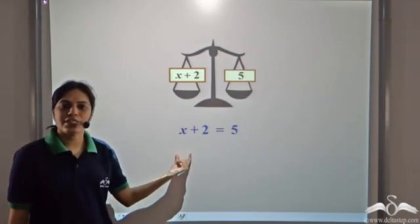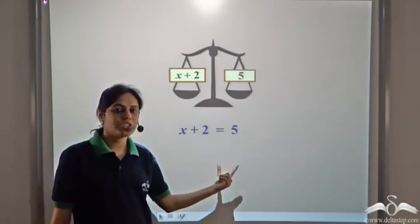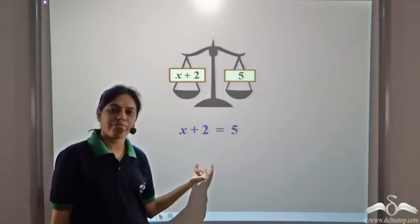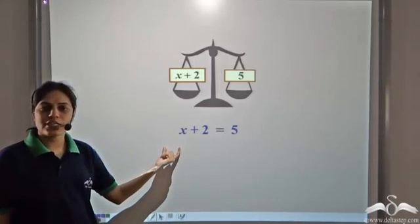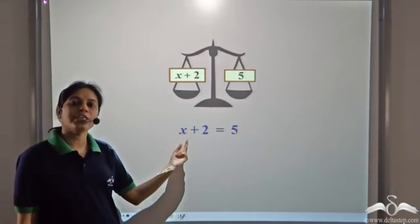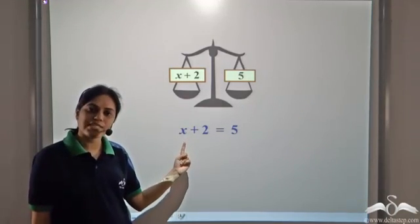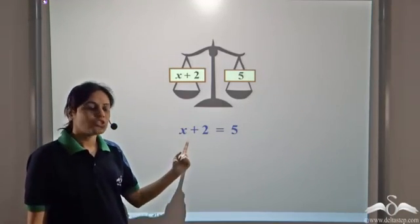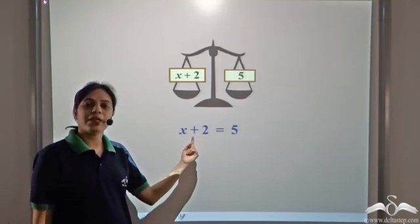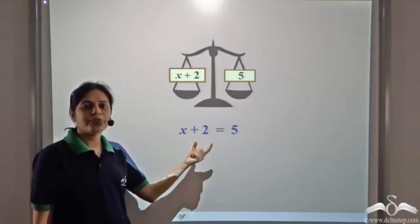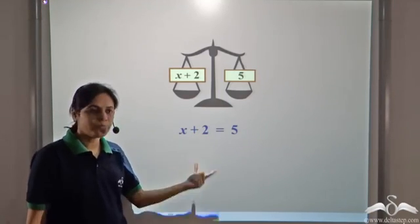We need to solve this equation: x plus 2 is equal to 5. In order to solve this equation, we need to have only x on one side. So since we have a plus 2 here, we need to subtract 2.